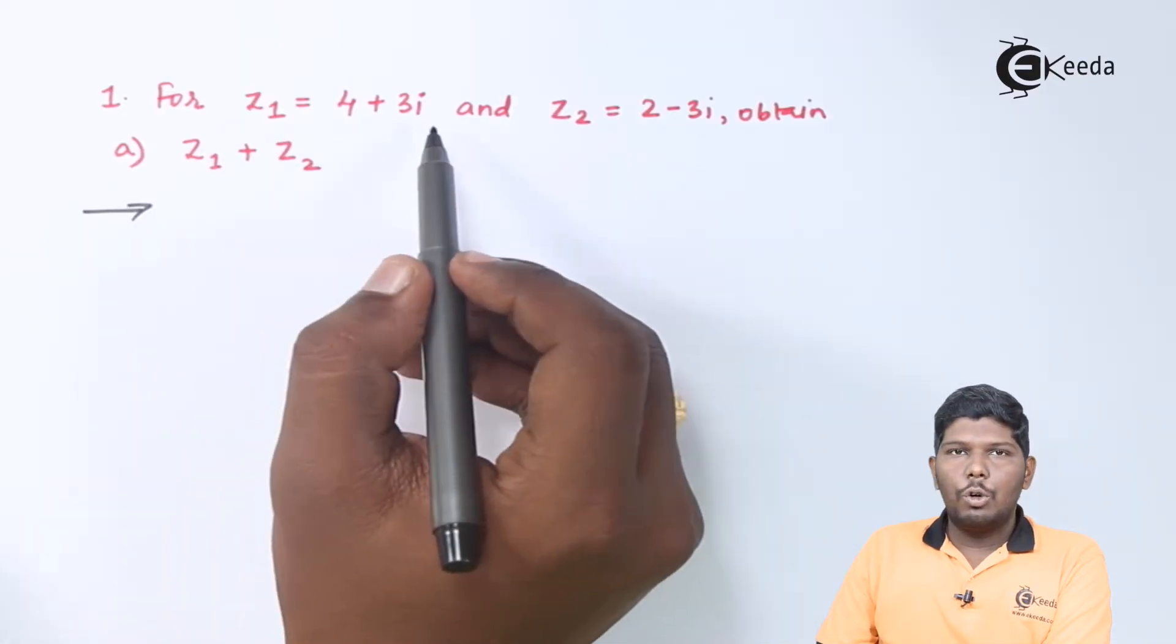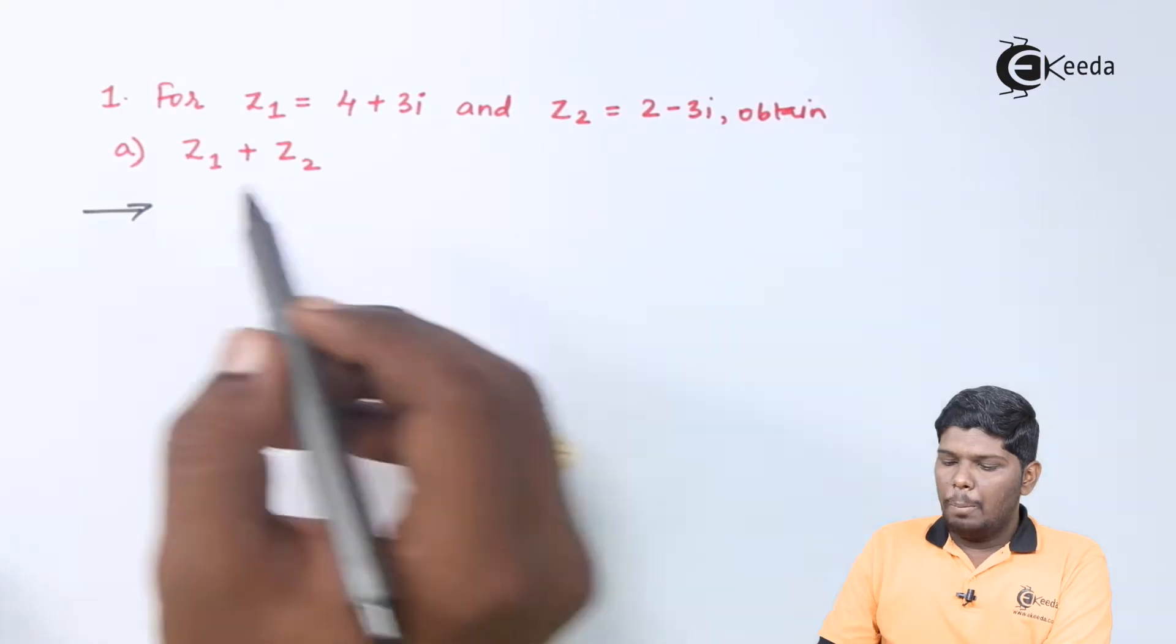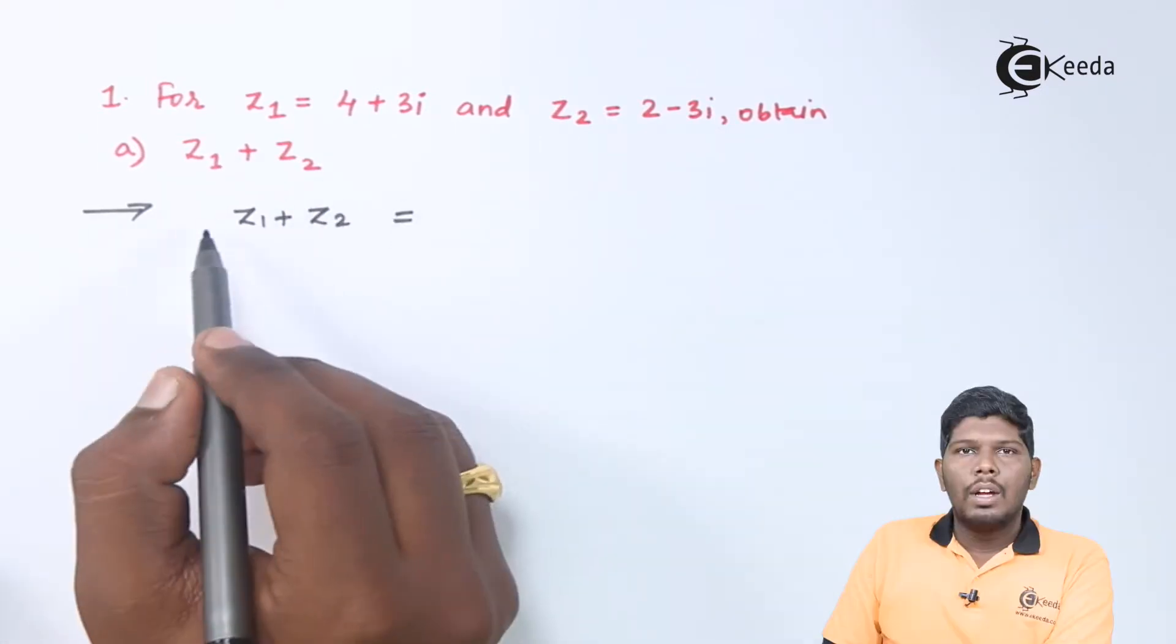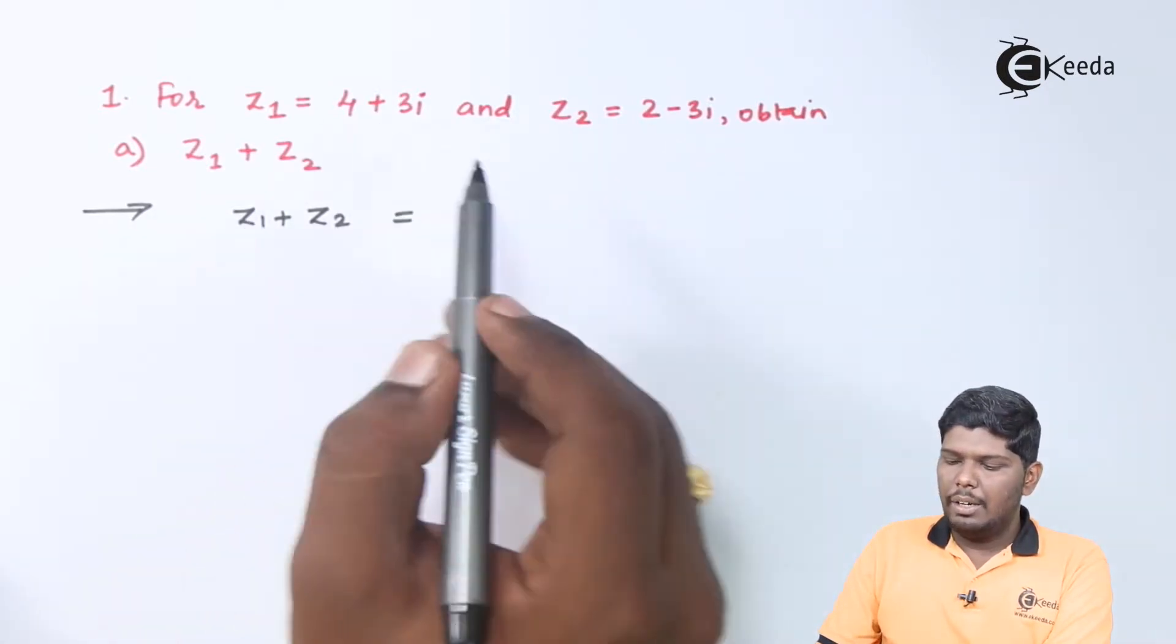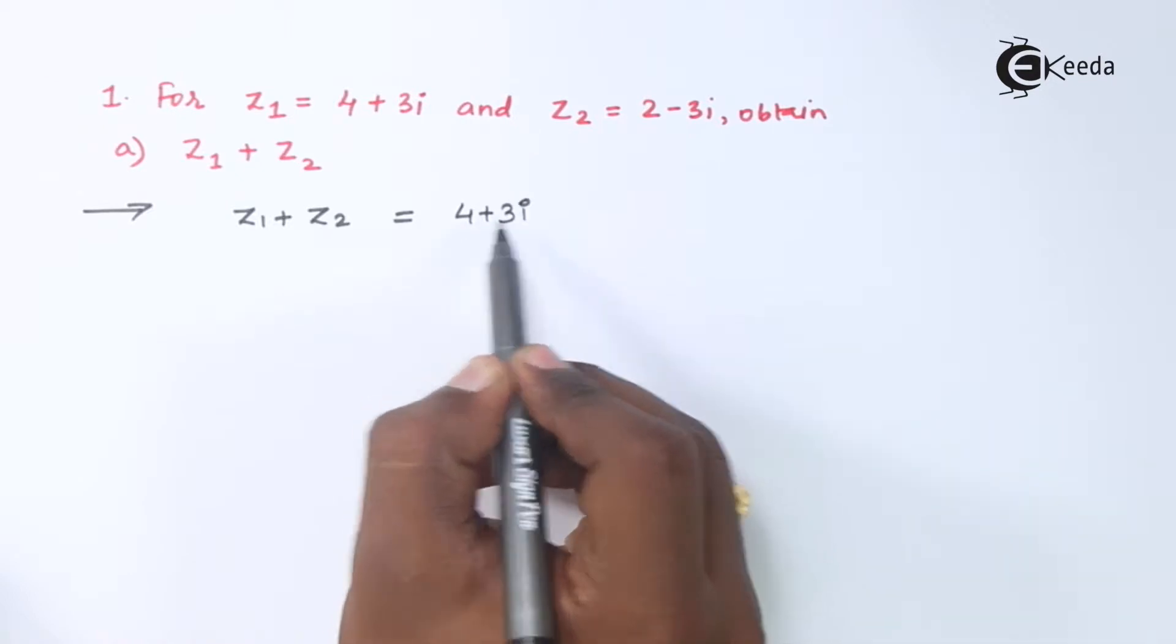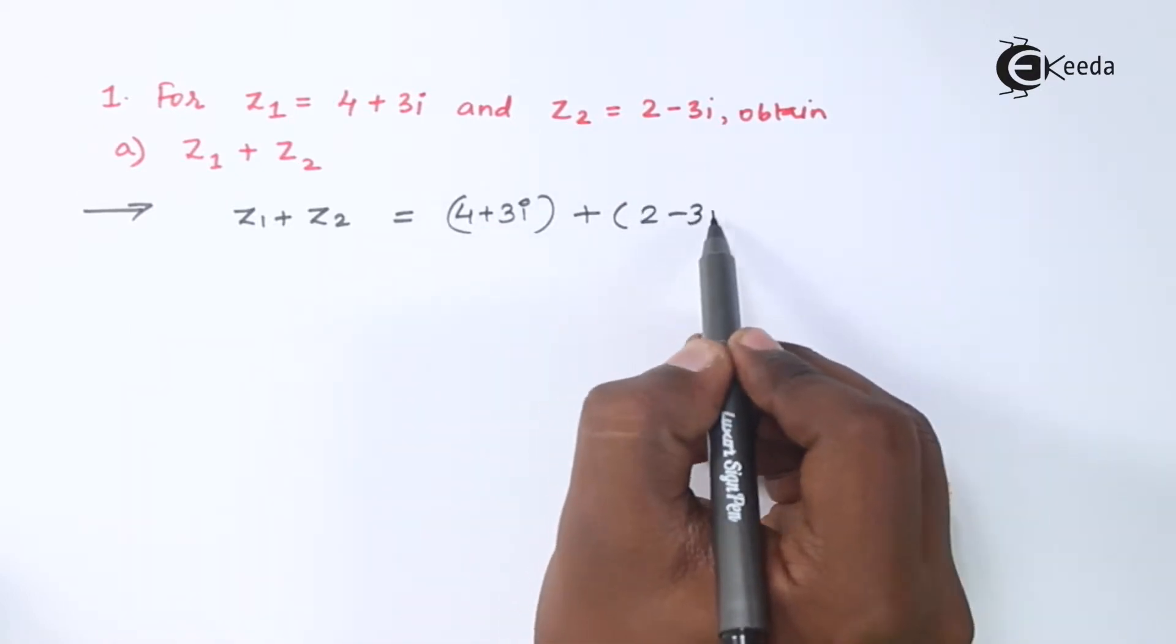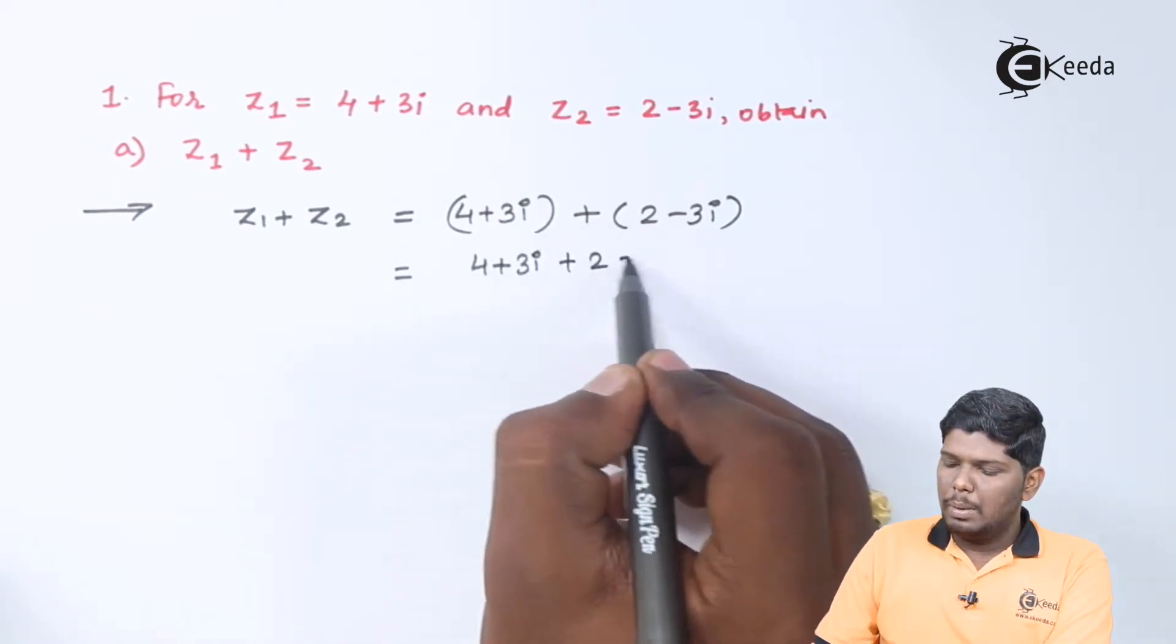For z1 is equal to 4 plus 3i and z2 is equal to 2 minus 3i, obtain z1 plus z2. To find z1 plus z2, we need to add these two complex numbers where z1 is 4 plus 3i and z2 is 2 minus 3i. That will give you plus 2 minus 3i.